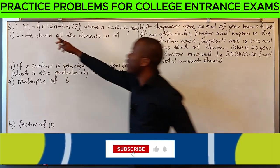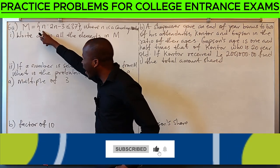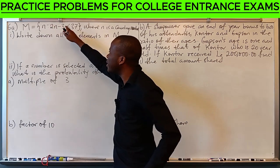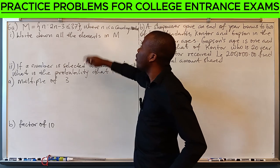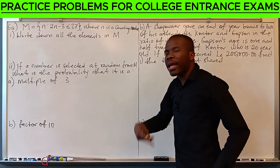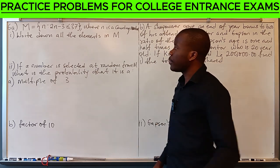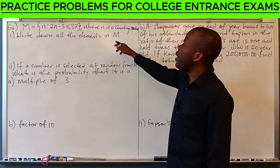M is the set of N such that 2N minus 3 is less than or equal to 37. Here N is a counting number. By counting number we mean natural numbers starting from 1. We can write down all the elements in M.